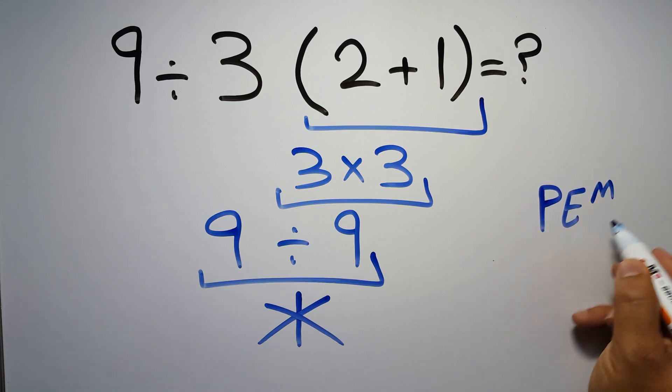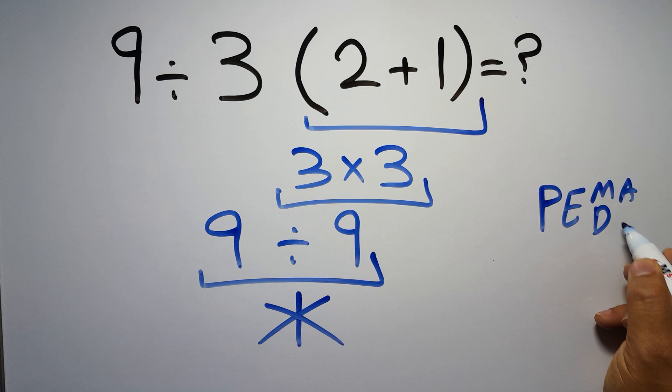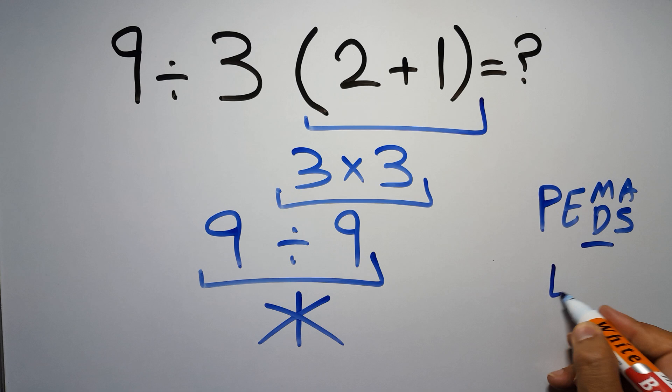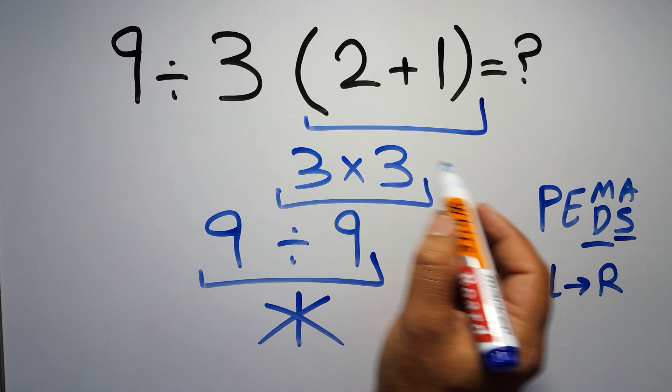exponents, then multiplication or division, and finally addition or subtraction. Remember that multiplication and division have equal priority and we have to work from left to right. The same applies to addition and subtraction. In this expression we have